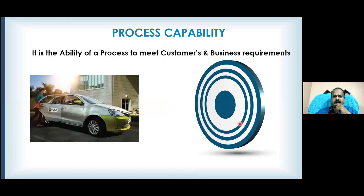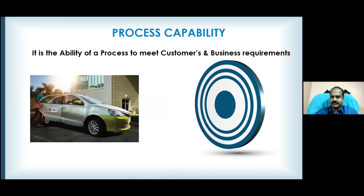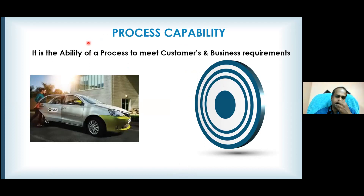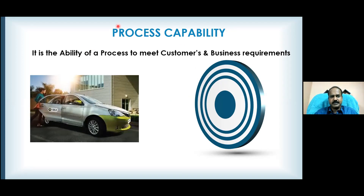Now let us understand Six Sigma in the context of a call taxi service — like Ola, Uber, or similar services in your country. When you book a car, the car will come within the stipulated time. It is like your online food delivery system. Now what is process capability with respect to this kind of service?